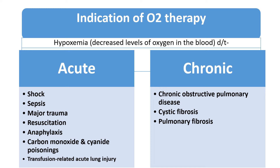Oxygen therapy is indicated in various conditions where the patient is developing hypoxemia — decreased level of oxygen in the blood — due to acute conditions such as shock, sepsis, major trauma, resuscitation, anaphylaxis, carbon monoxide or cyanide poisoning, or transfusion-related acute lung injury. In acute bronchiolitis and severe pneumonia, children may also require long-term oxygen therapy in chronic conditions such as COPD, cystic fibrosis, and pulmonary fibrosis.